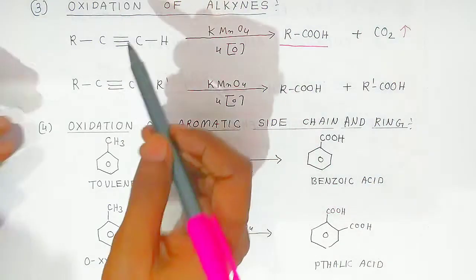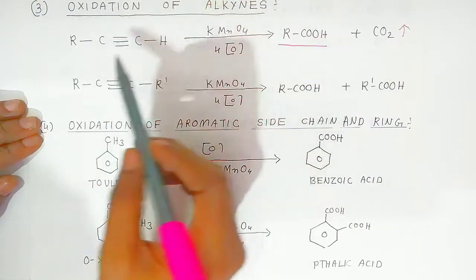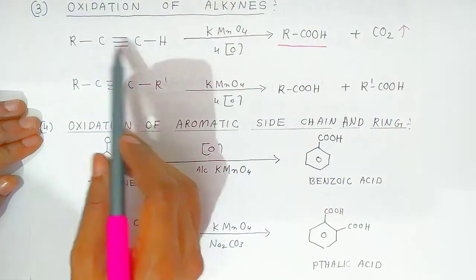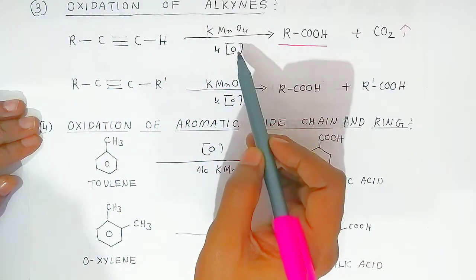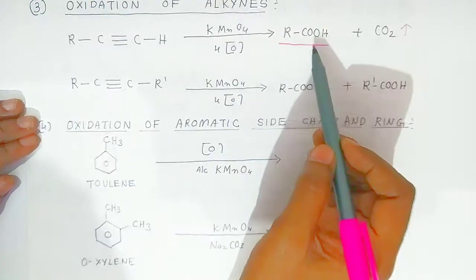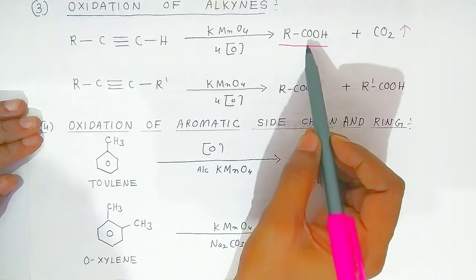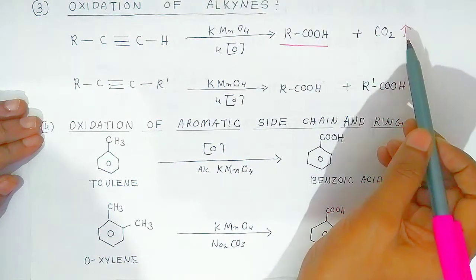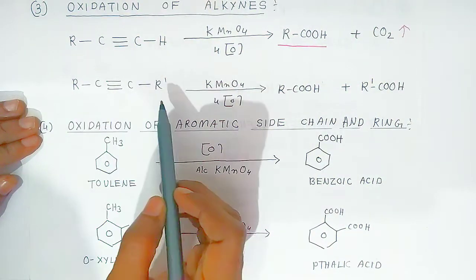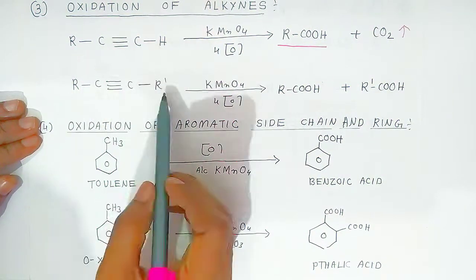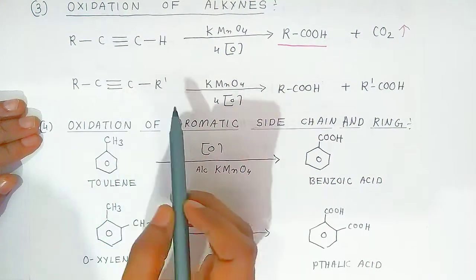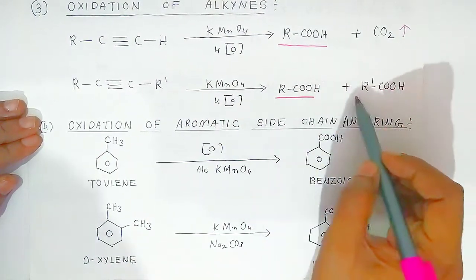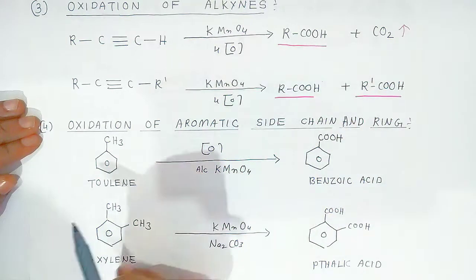Now we can oxidize other compounds like alkynes — oxidation of alkynes. The carbon-carbon triple bond, in presence of KMnO4, is oxidized to carboxylic acid and carbon dioxide gas is eliminated. Similarly, if an alkyl group is attached to both the triple-bonded carbons, then it is converted into two different types of carboxylic acids.